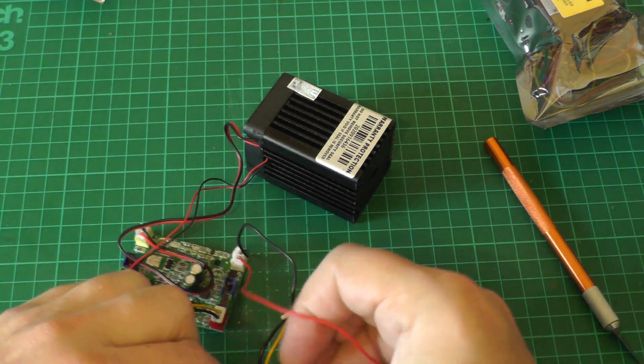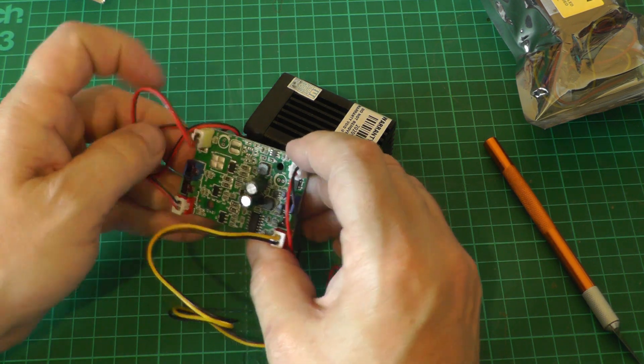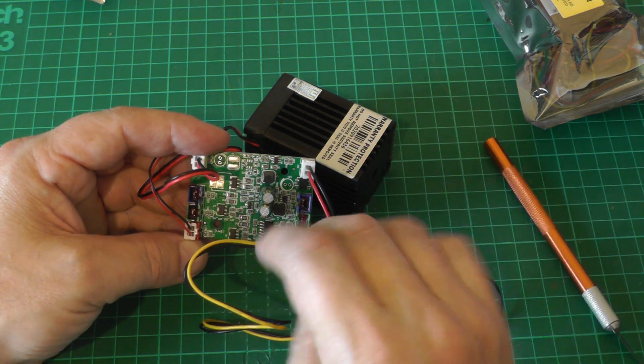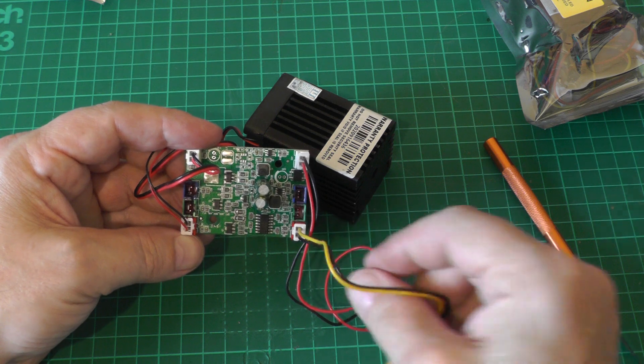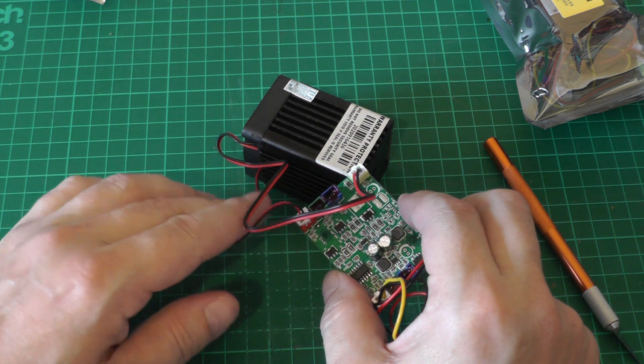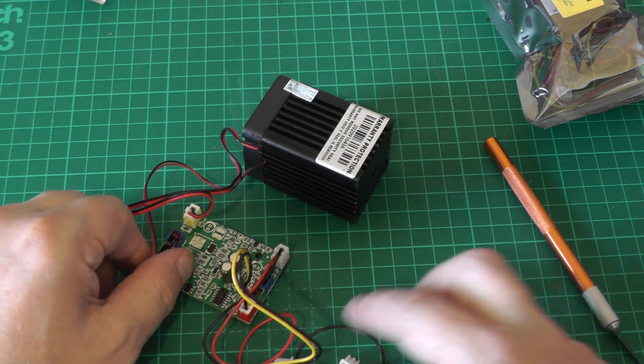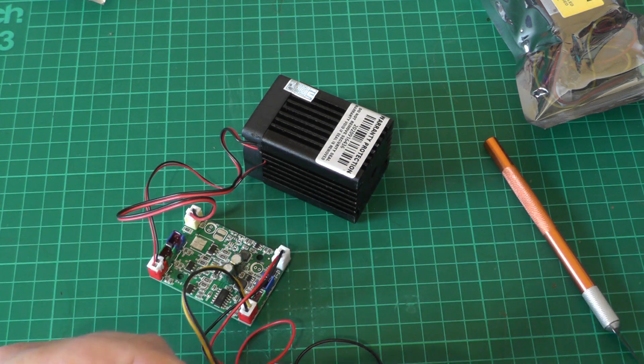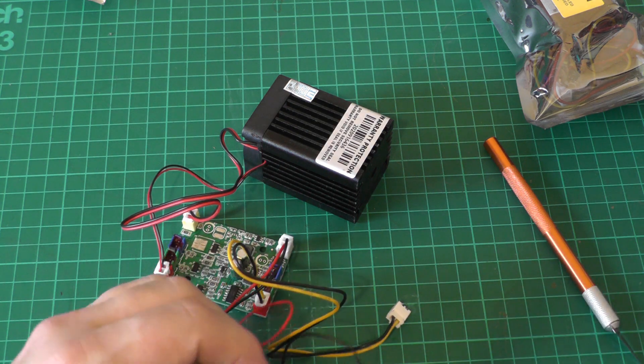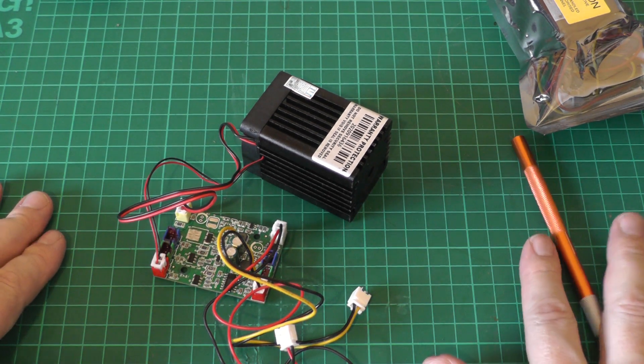According to the paperwork and the silk screen on the PCB, which is very nice to see, we've got 12 volts in over here for the power supply, that's red and black. We've got analog modulation in 0 to 5 volts on yellow and black. Then we've got the supply for the laser diode itself and the supply for the fan. I've got a couple of connectors here - I don't want to snip the originals off. Let's hook it up to the power supply and see what we've got.